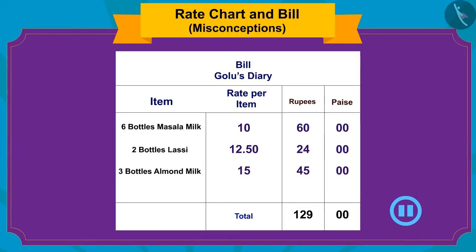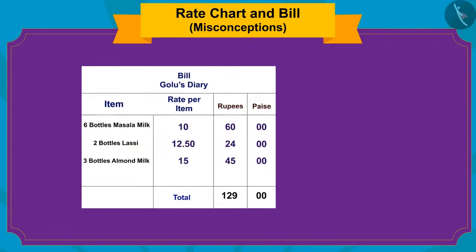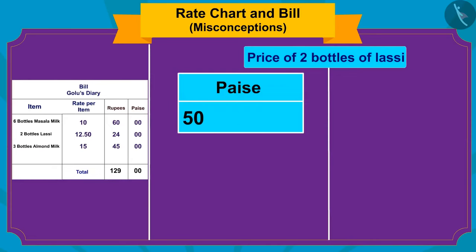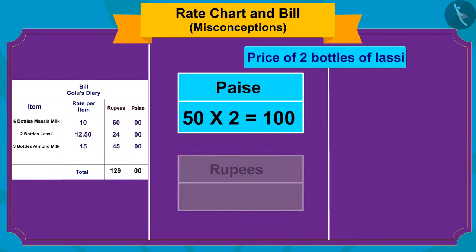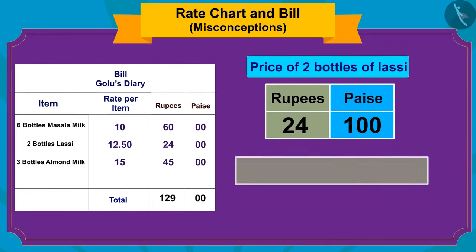If you want, you can pause the video and find the answer. Well done, children — you found the answer quite rightly. Golu calculated the amount correctly while finding the total price of lassi, but when he converted 100 paise to 1 rupee, he forgot to add it to the number 24.